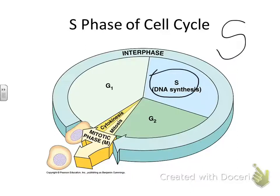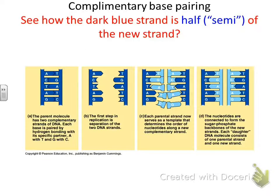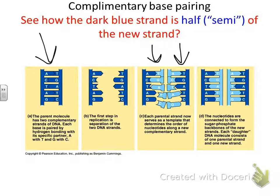When DNA copies itself, it makes an exact or complementary copy. DNA is semi-conservative — it's half old, half new. The blue here is the old strand. The DNA separates and builds onto both old strands, giving you two strands that are each half old, half new. DNA is semi-conservative, and this was discovered by Matthew Meselson and Franklin Stahl, who proposed this model in 1958.